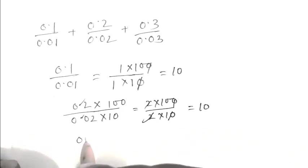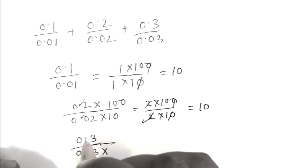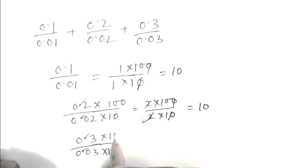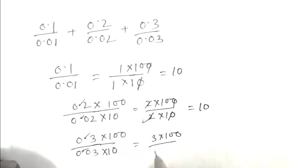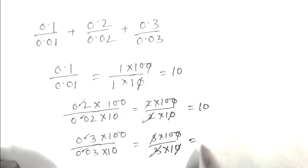Third part, that is 0.3 upon 0.03. 3 times 100, 3 times 10. So 3 and 3 cancel, 0 and 0 cancel, equals 10.